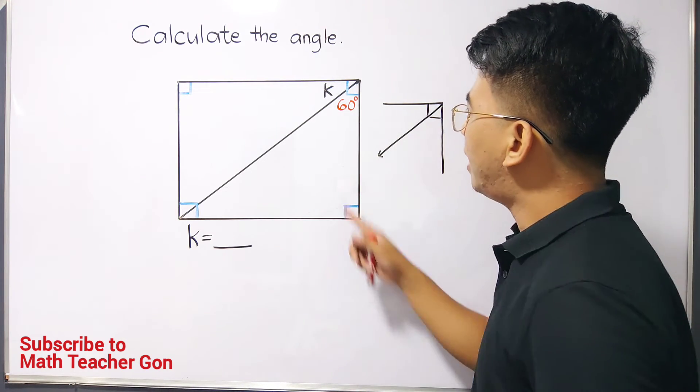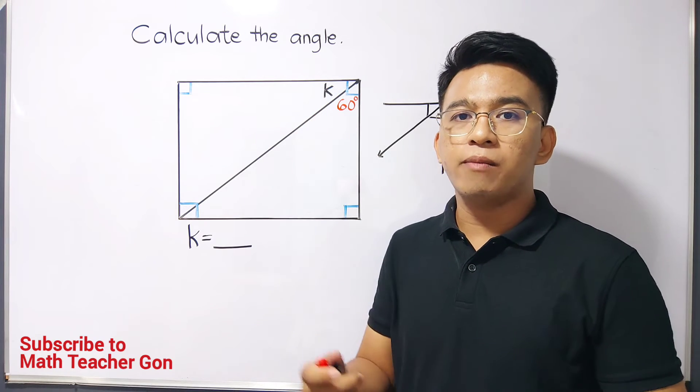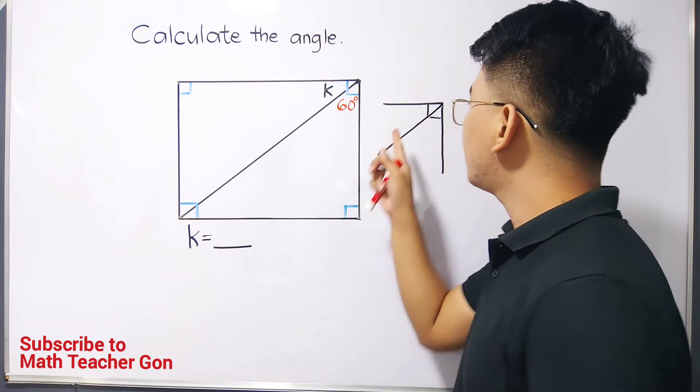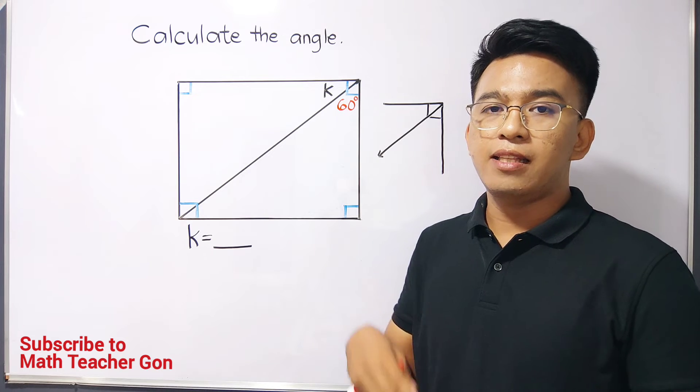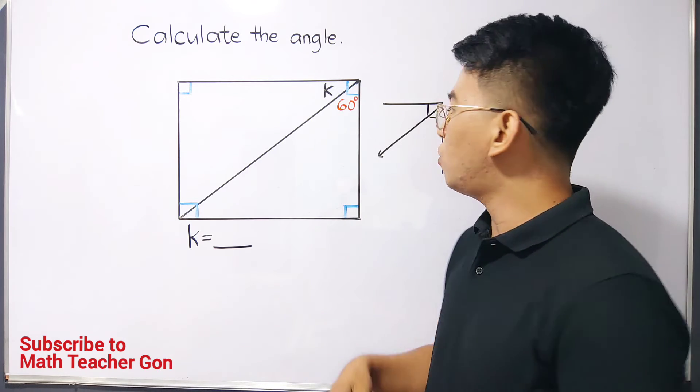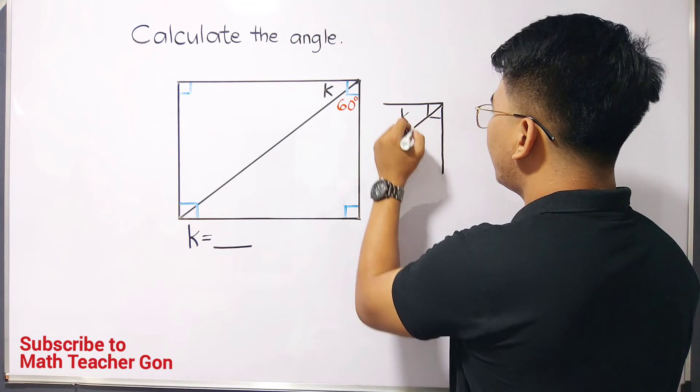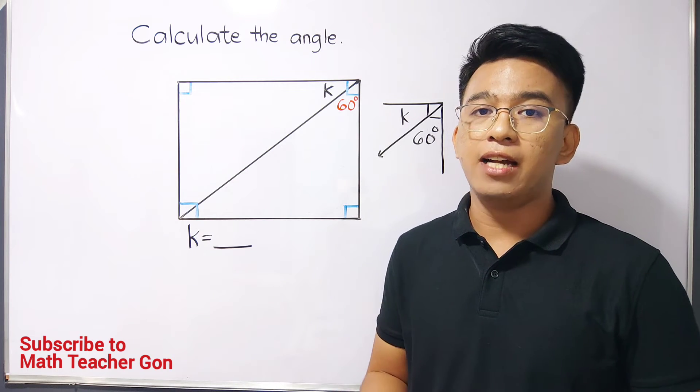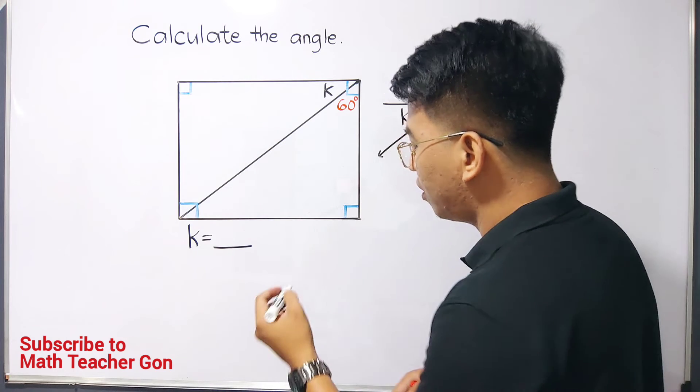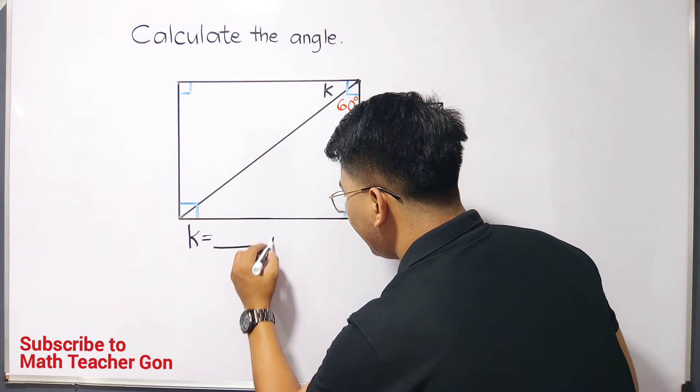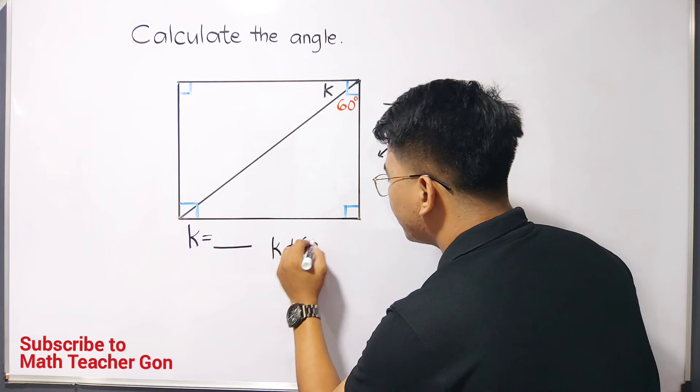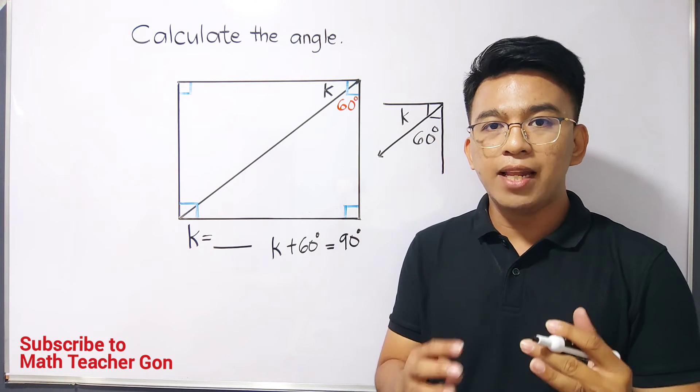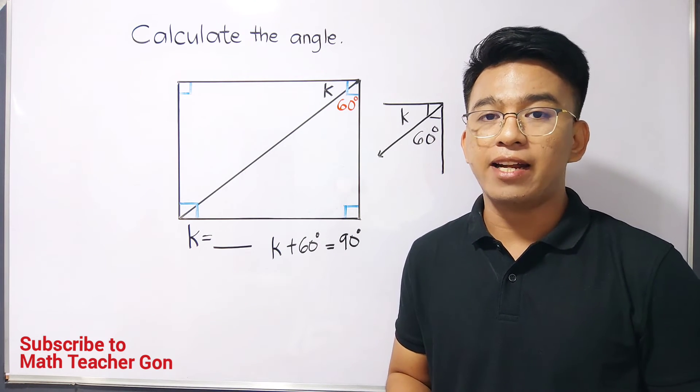Meron tayong ganitong klaseng angle in which yung angle natin is a 90 degree angle at meron tayo itong line. So, it simply means na itong dalawang angles na to, they formed complementary angles. So, again, when you say complementary angles, these are angles that has the sum of 90 degrees. So, meron tayong clue that angle k and this 60 degree angle is an example of complementary angles. Therefore, we can create an equation in which it goes like this. We have k plus 60 degrees is equal to their sum which is 90 degrees.